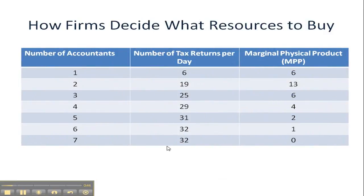The first thing we're going to do is take a look at a resource schedule. This is an accounting firm deciding how many accountants it should employ. We see that left-hand column — we've got a schedule where we could hire one accountant, two, three, four, up to seven. The next column gives us the number of tax returns that we would expect to be able to finish as a result of hiring these different numbers of accountants.